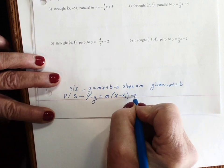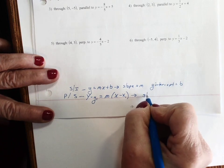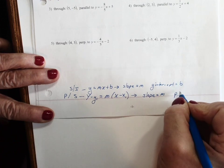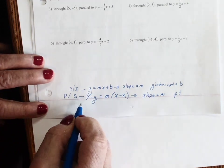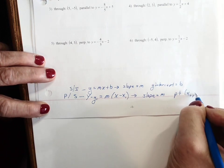The next thing you need to memorize is point slope which is y minus y1 equals m times x minus x1. And here we have the slope again, m. So the slope is equal to m but now we have a point. We have an ordered pair x1, y1.